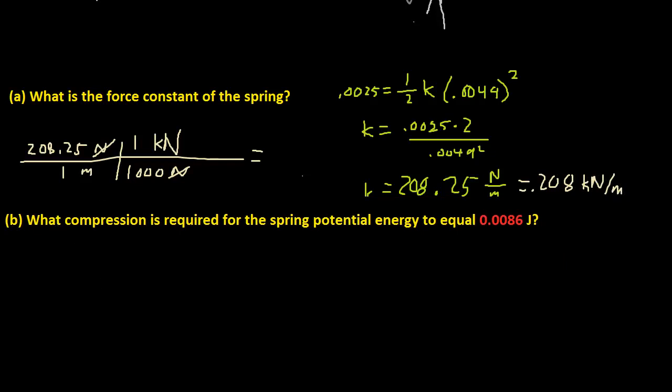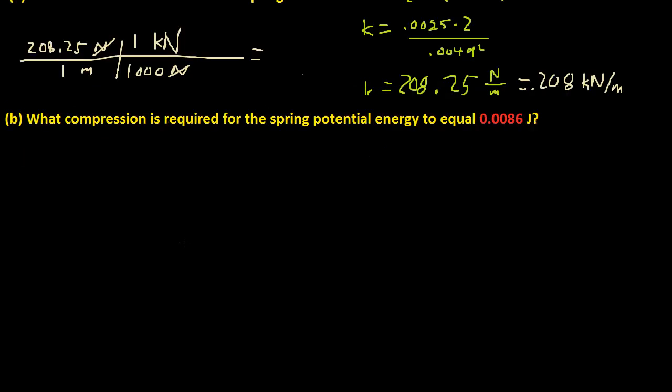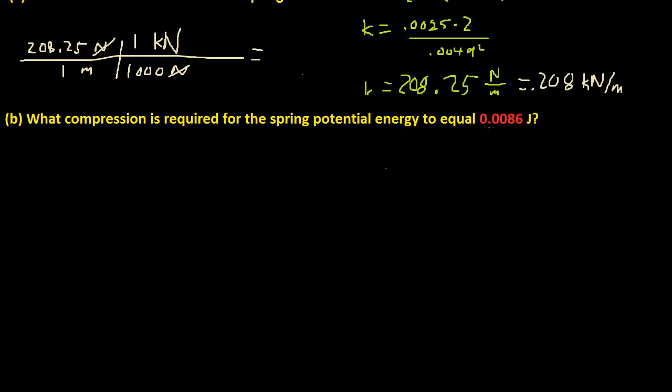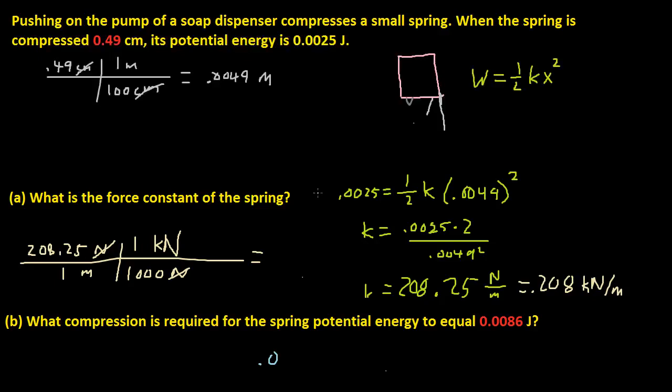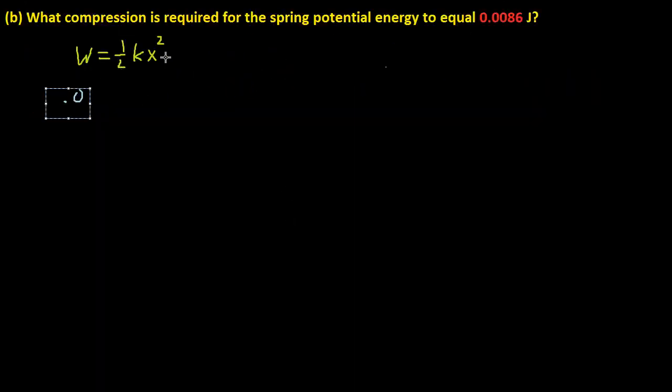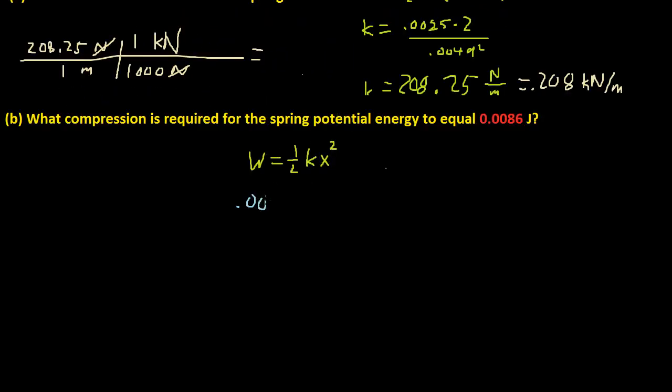This part says, what compression is required for the spring potential energy to equal 0.0086 joules? Well, this is simple because we already have our k, so we just need to plug in our values and solve for x squared. So, and we even have our potential energy. So from this equation right here, let me just copy this down so we can refer back to it.